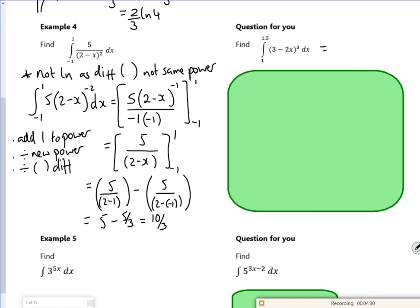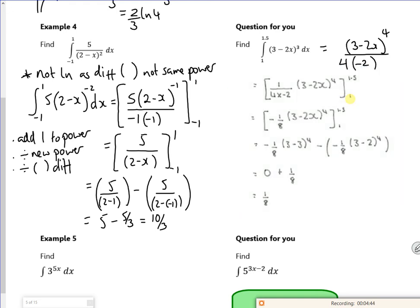There's one here for you, so it should be a case of add one to the power, divide by the new power, divide by the inside the bracket differentiated with brackets round and round. And it's nice to write it with the constant at the front if you can, it just looks nicer. I've got a bracket round there, be really careful with your own brackets.